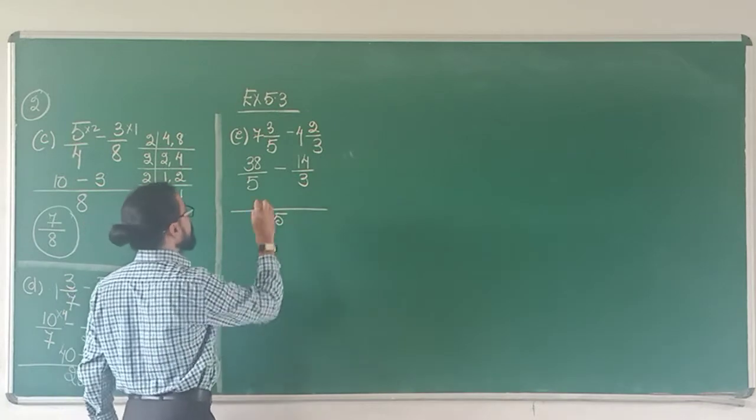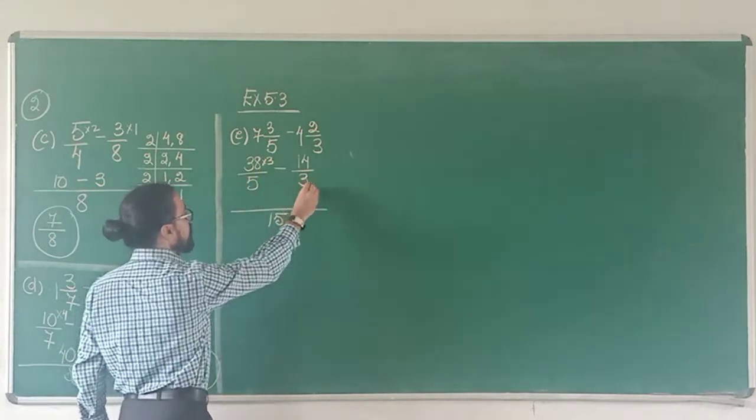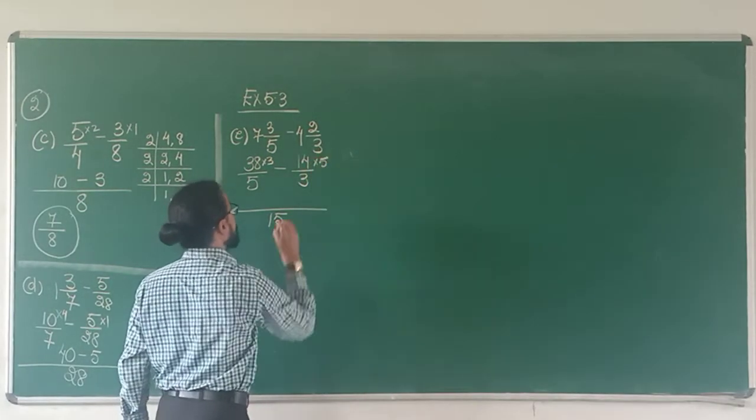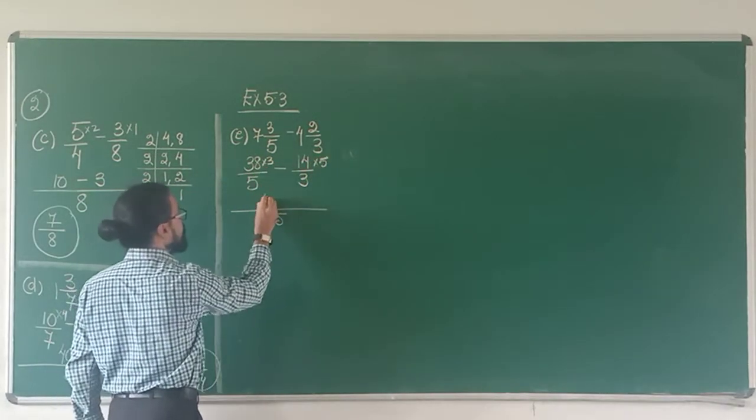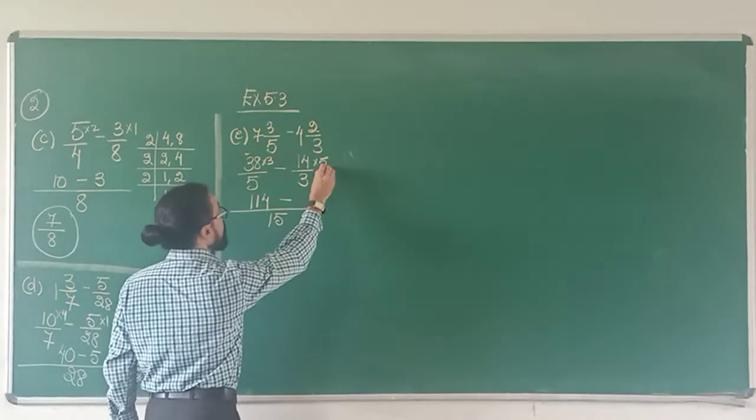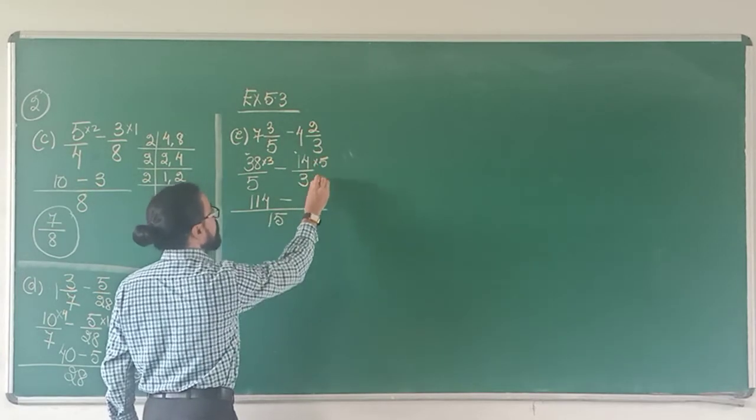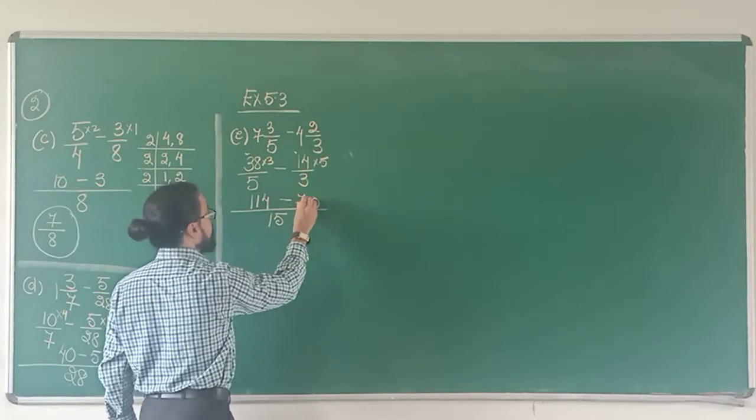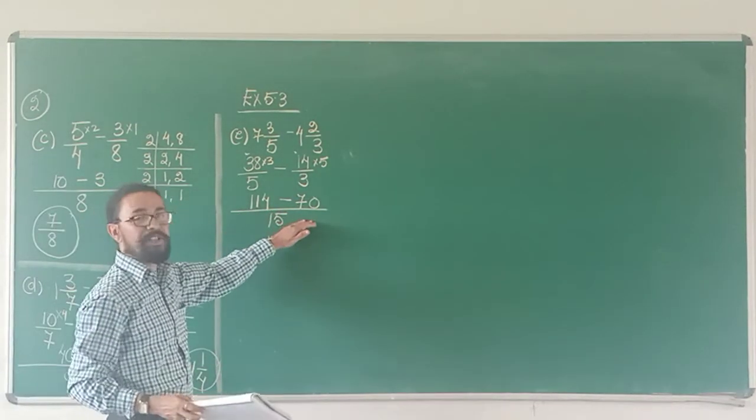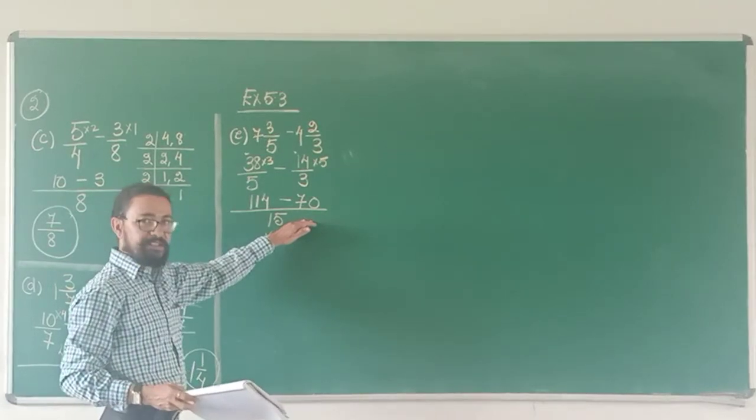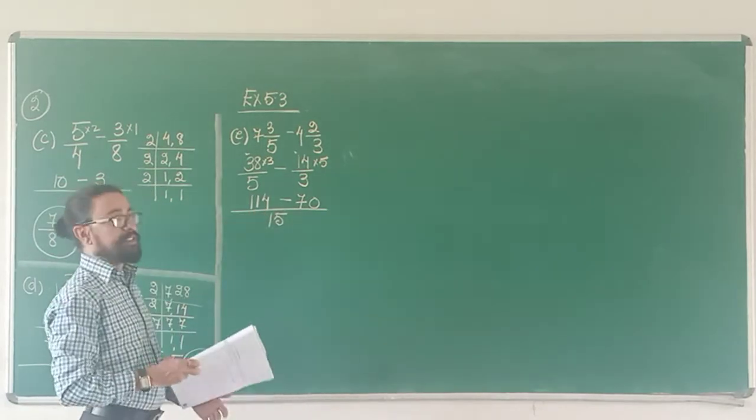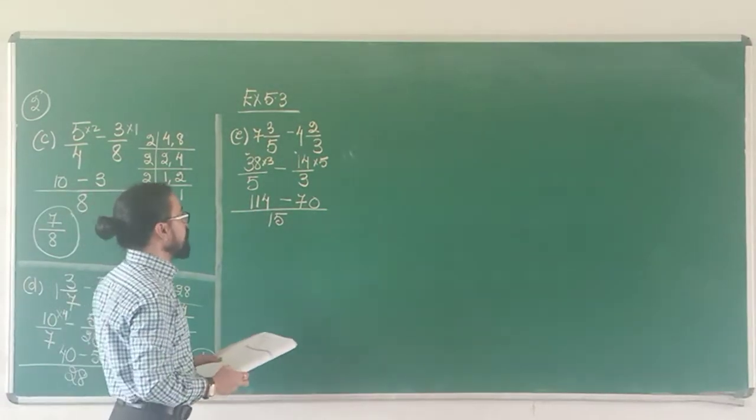5 goes into 15 three times so this has to be multiplied by 3. 3 goes into 15 five times so 14 has to be multiplied by 5. 3 8's are 24 carry 2, 3 3's are 9 and 2, 114 minus. 5 4's are 20 carry 2, 5 1's 5 and 2, 7. From 114 I have to take away 70. Suppose this is 100 and I take away 70, I will be left with 30. Correct? I will be left with 30. Add another 4 so it will become 34.